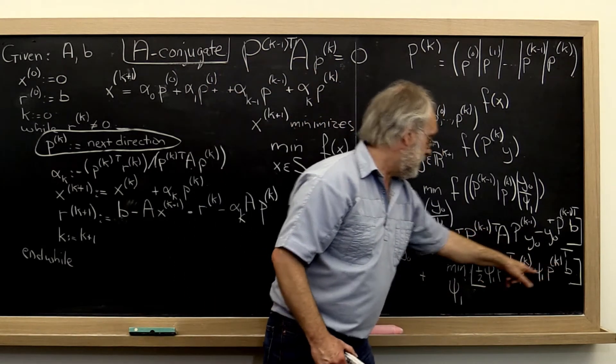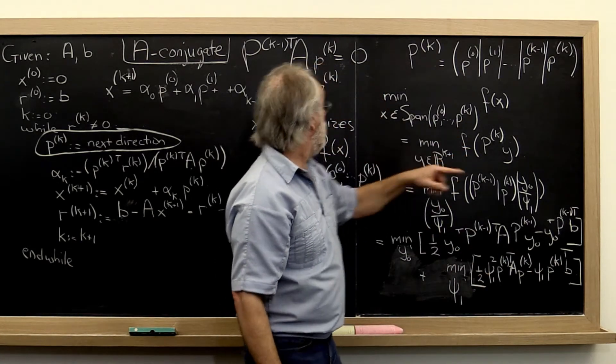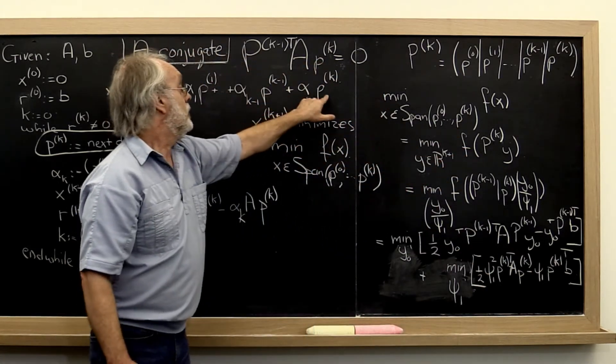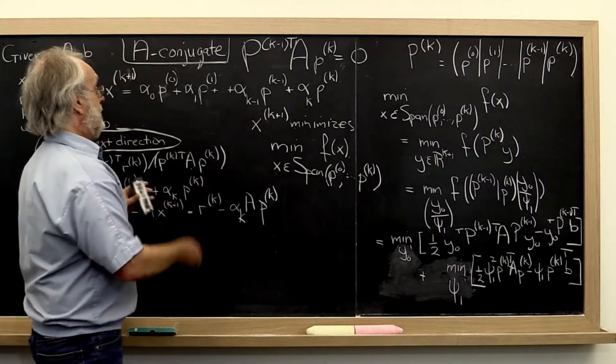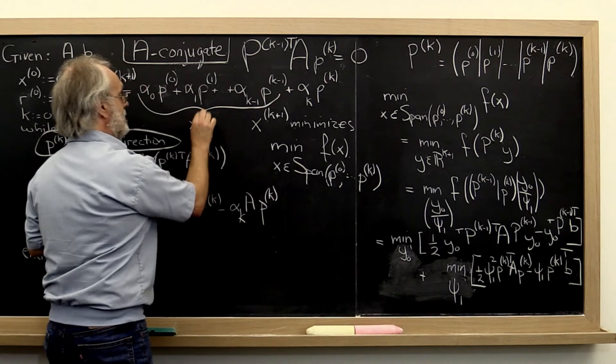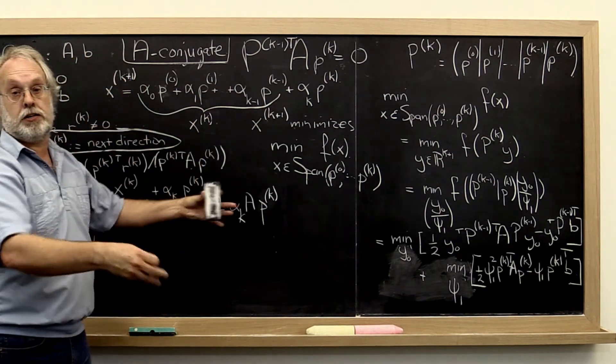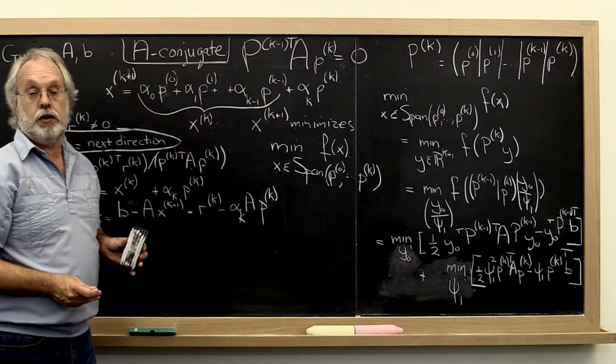And then this tells us how we need to add one more term to x_k. This is x_k, in order to come up with our next approximation for our solution.